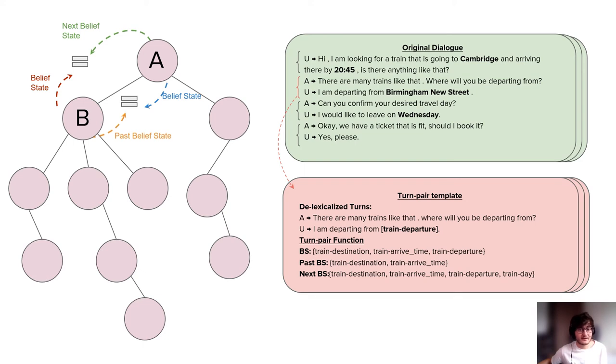In the end, we sample every path from the root node to the leaf node where each is a synthetic dialogue that is coherent end-to-end.